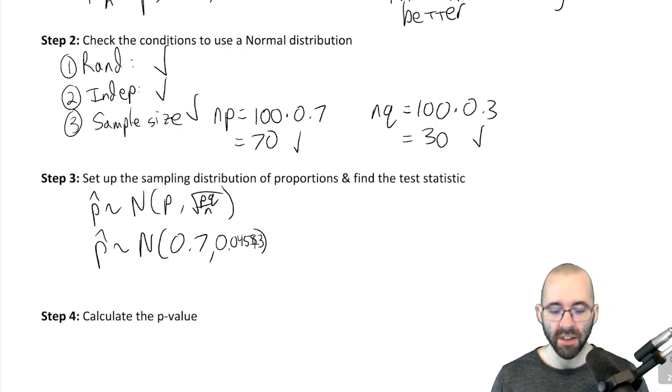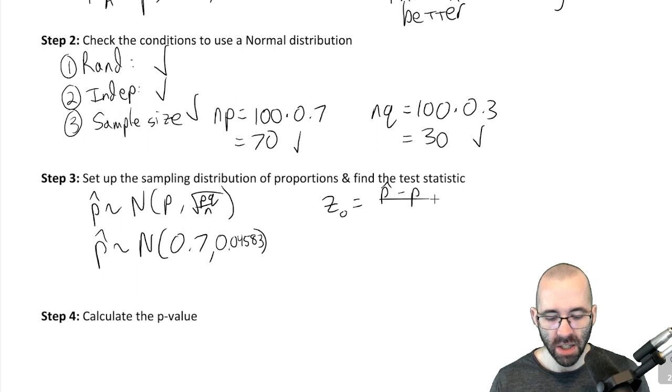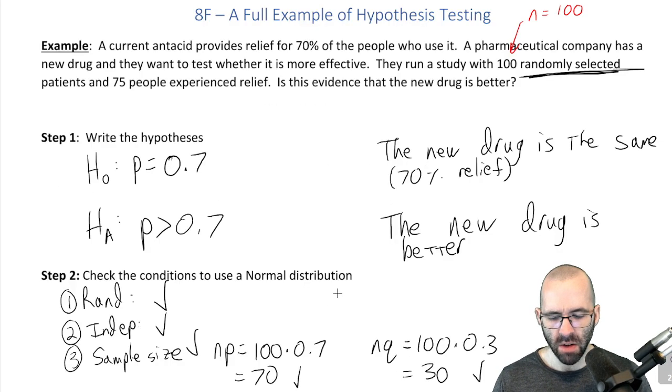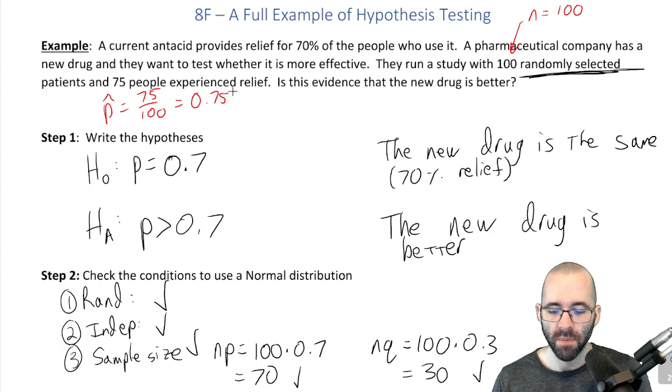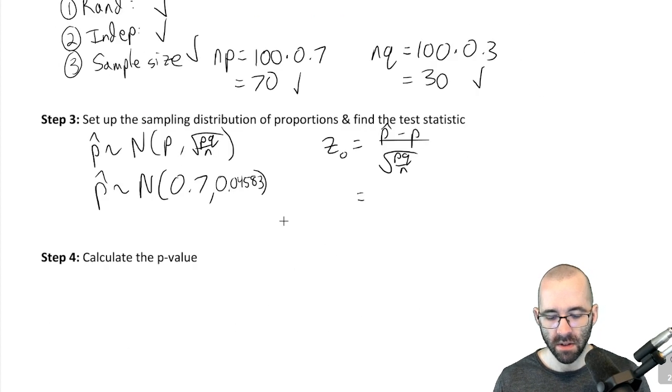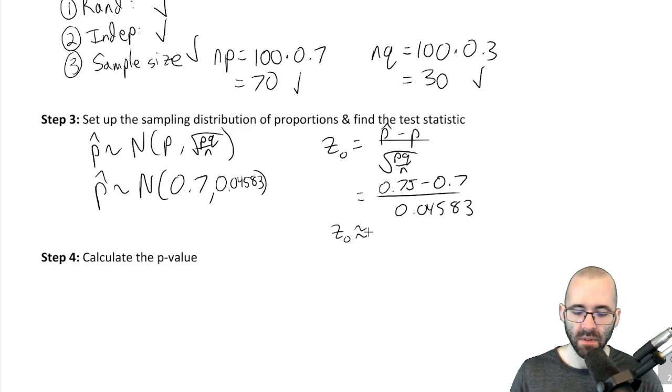0.04583. Find the test statistic. Our test statistic was p-hat minus p over this. P-hat: what proportion of our sample experienced relief? 75 out of 100, 0.75. 0.75 minus p which was 0.7, all over 0.04583. Our test statistic is whatever that is.